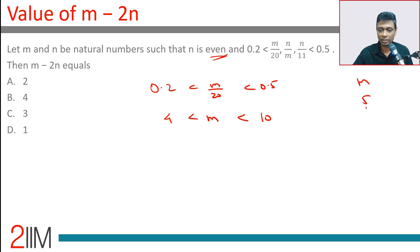Likewise, 0.2 < n/11 < 0.5. 2.2 < n < 5.5. N can take values 3, 4, 5. N is even, so n can only be 4.